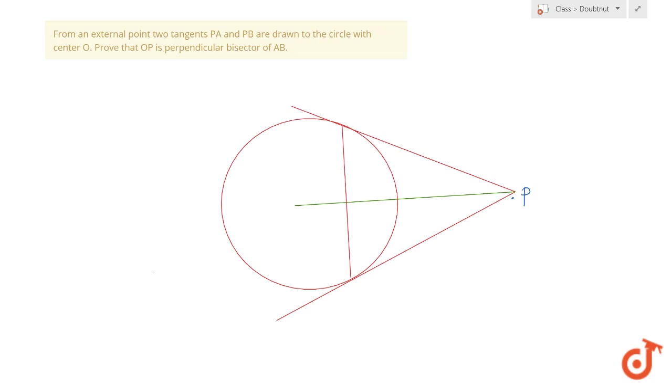The question says from an external point P, two tangents PA and PB are drawn to a circle with center O. We have to prove that OP is perpendicular to AB, as well as OP bisects AB. We also have to prove that AX is equal to BX. These are the two things that I need to prove: that OP is the perpendicular bisector of AB.